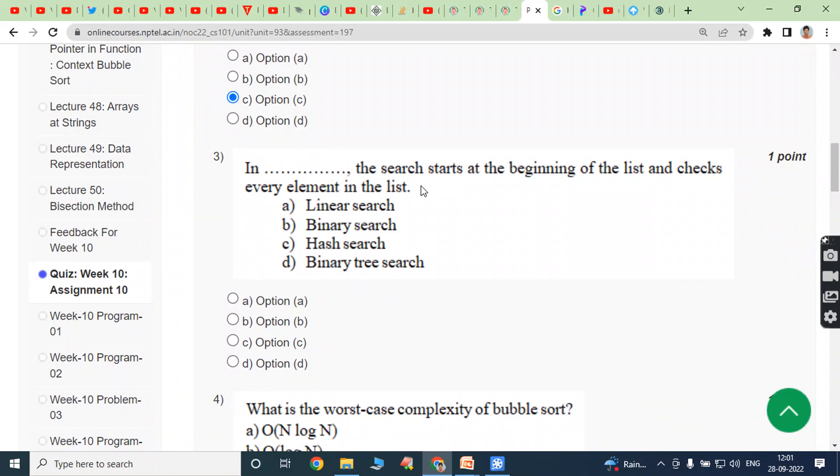Third bit: In dash, the search starts at the beginning of the list and checks every element in the list. So that is option A, linear search. Answer is option A.